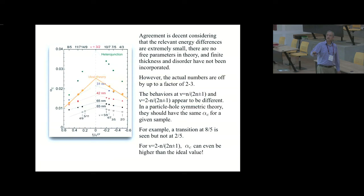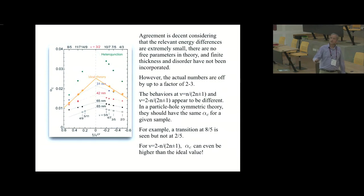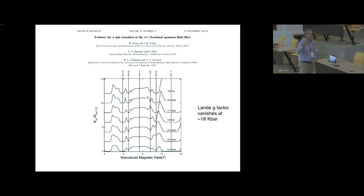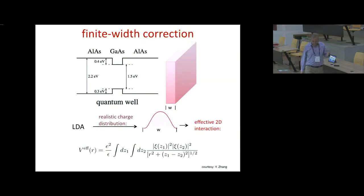Looking at a 65 nanometer wide quantum well, the two energies for particle-hole conjugate states are different — an example of particle-hole symmetry breaking. Also, looking at 8/5, it is observed, but 2/5 is not seen at all. In order to see 2/5, you have to reduce the Zeeman energy further by applying hydrostatic pressure. In these systems, as a function of hydrostatic pressure, at about 18 kilobars the Zeeman energy goes to zero. So at some hydrostatic pressure, 2/5 goes away then comes back — you really have to reduce the Zeeman energy quite a bit to see the spin phase transition at 2/5.